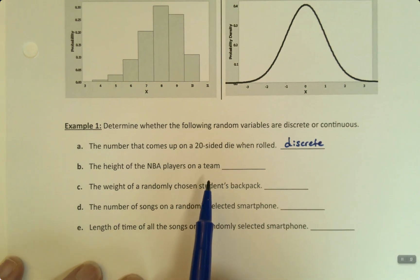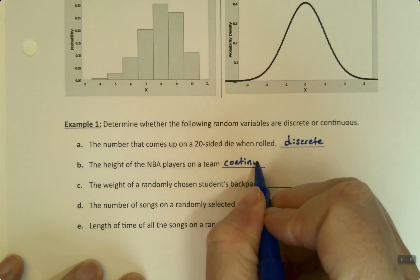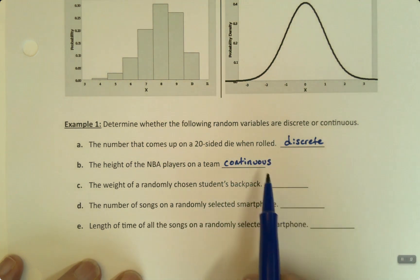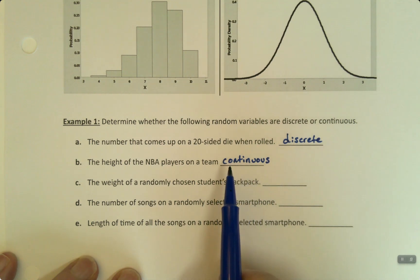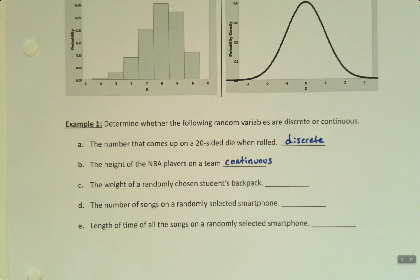The height of an NBA player on a team is continuous. Now, that doesn't mean that he's getting taller or shorter or anything like that. What it means is, I could get more decimal places of accuracy if I just have a better measuring tape. Right? Suppose I used a laser measuring system instead of a tape measure. That would be more accurate and I could get more decimal places. Perhaps he's not, you know, 7 feet 6 inches. He's 7 feet 6.23456 inches.